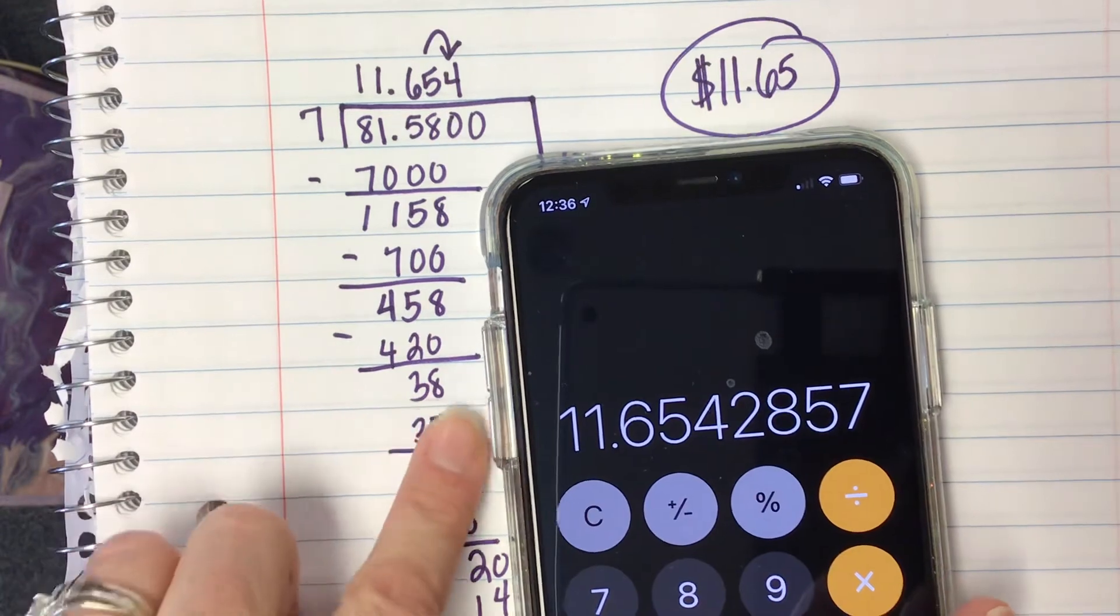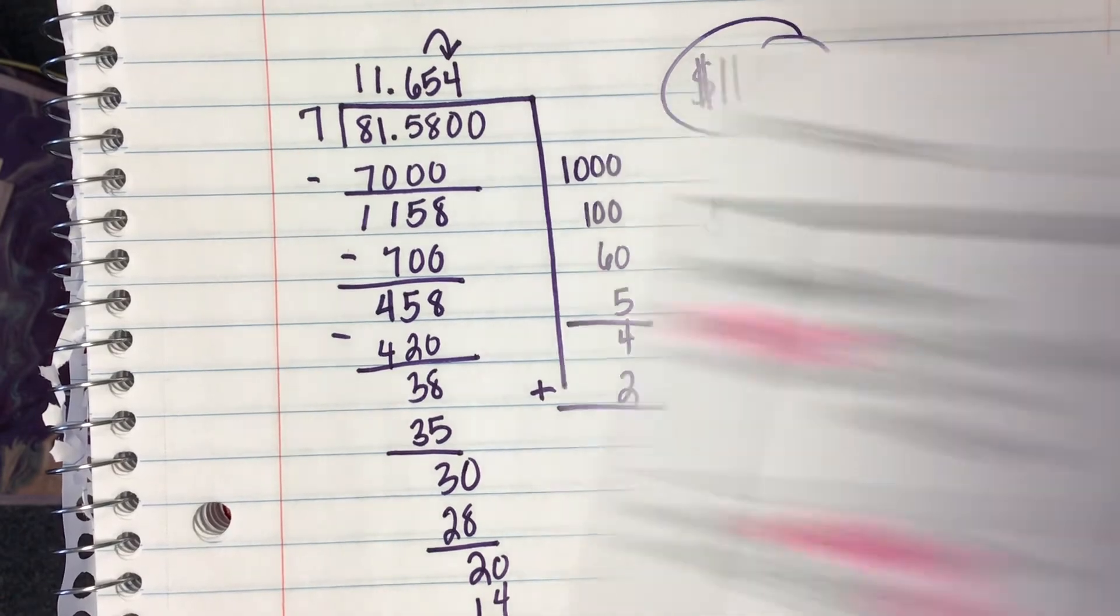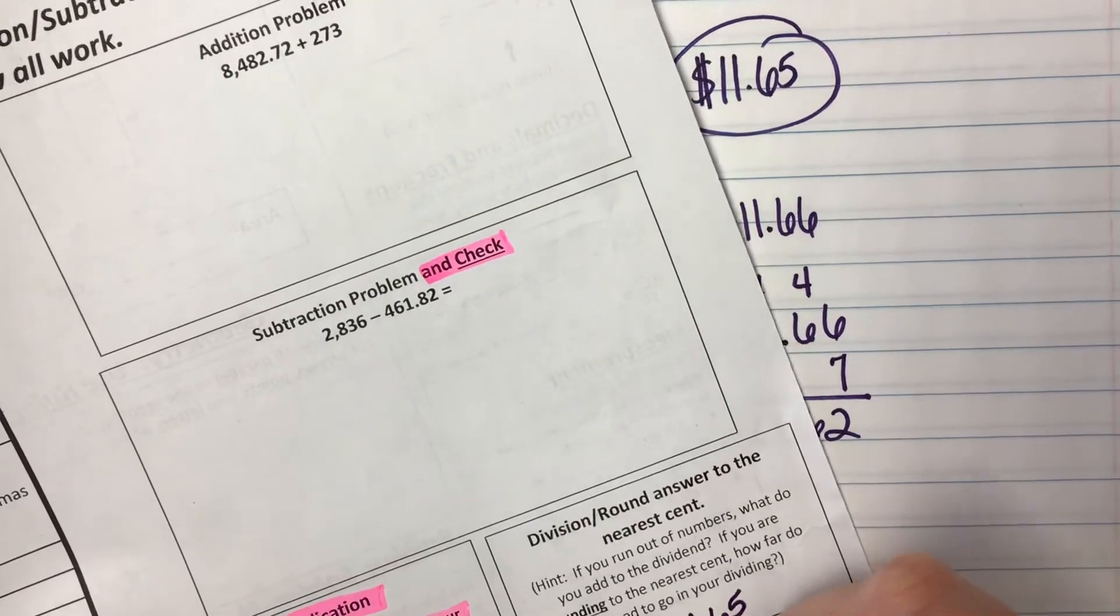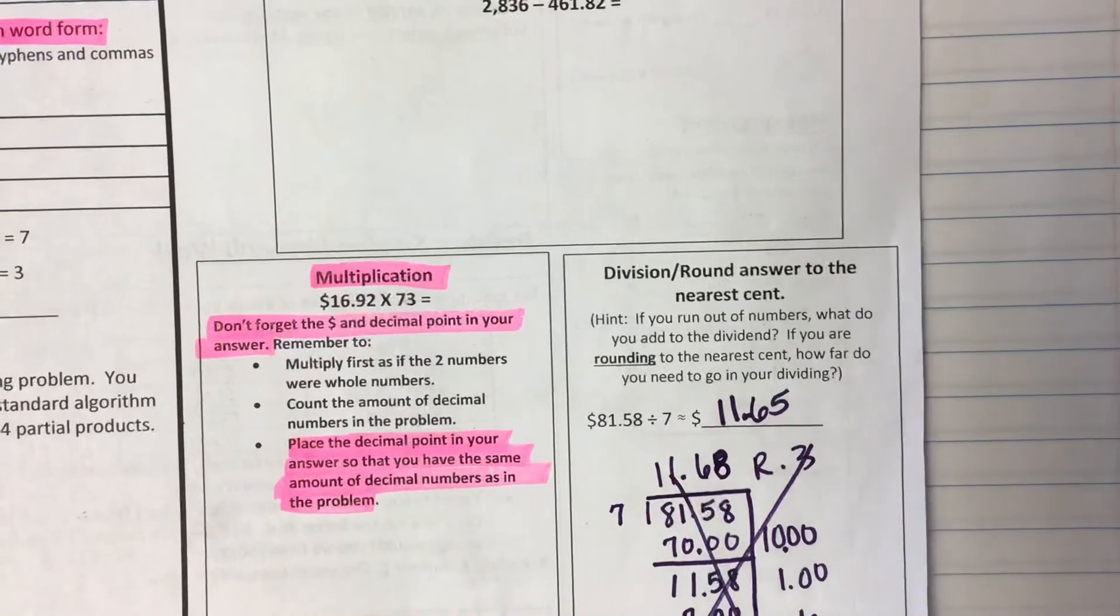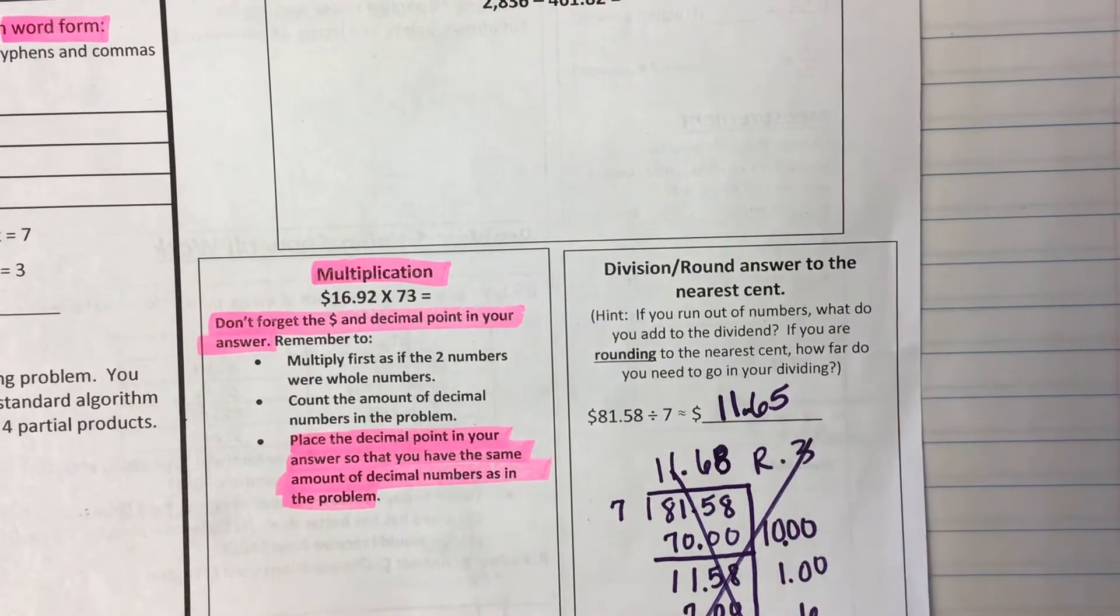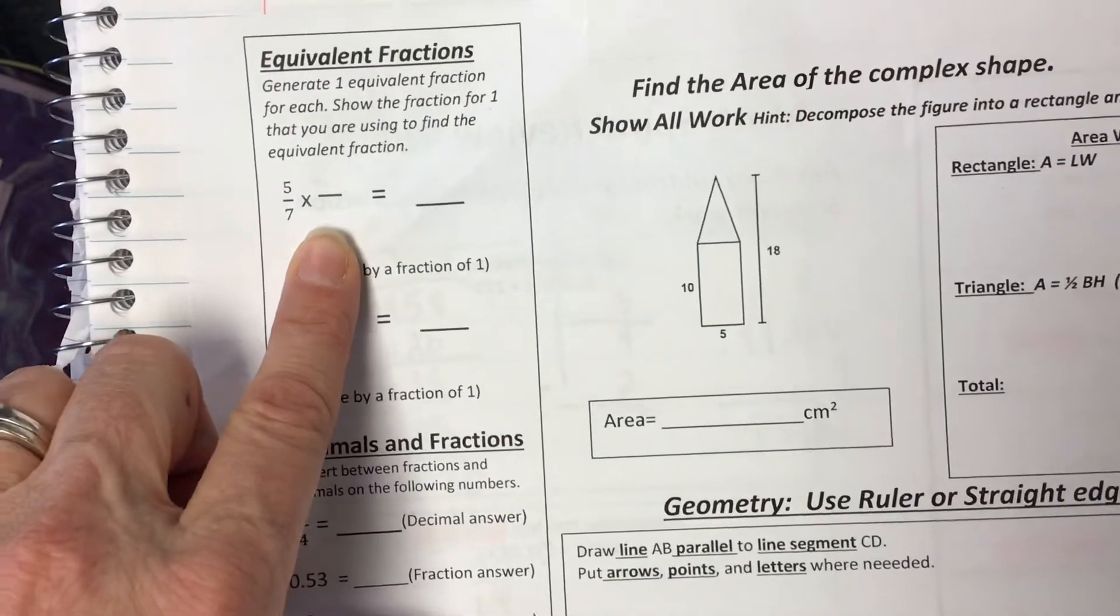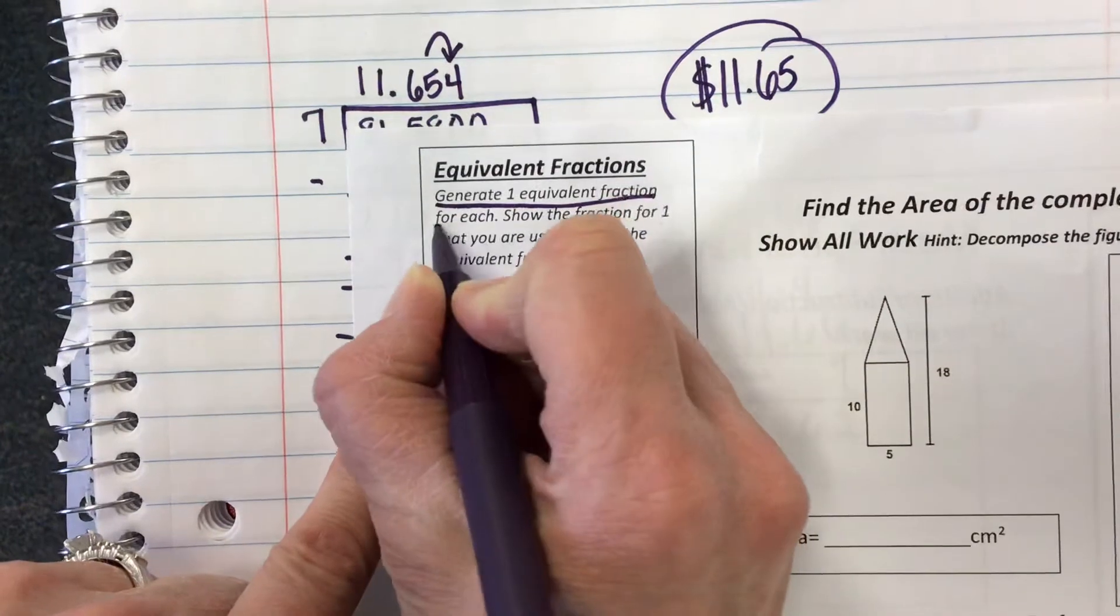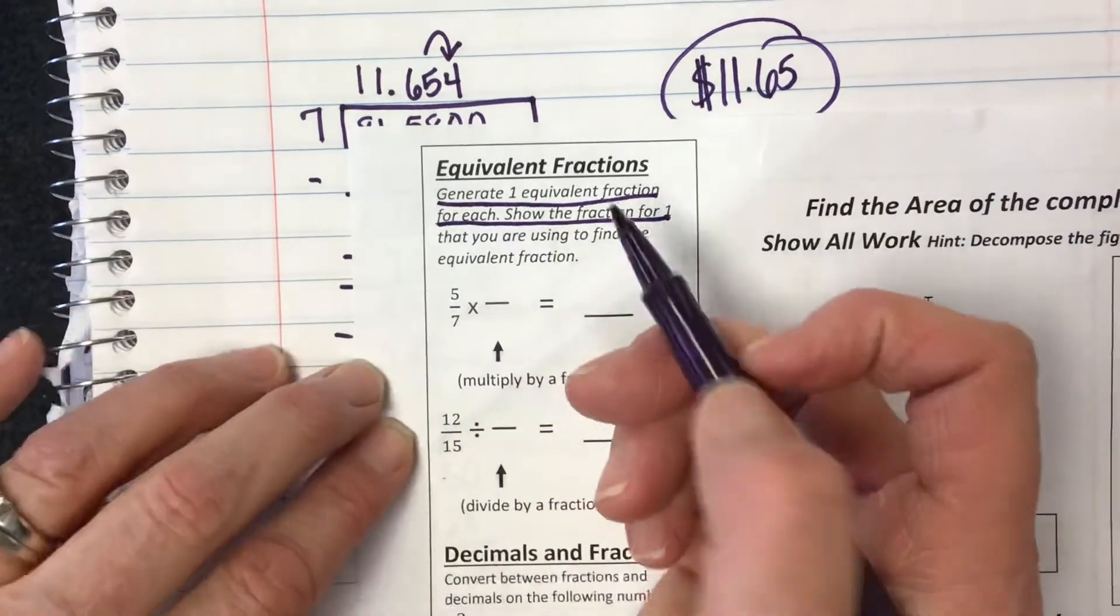Okay, so that's a really tricky one. And I'm sorry this video is so long, but I think it's important to show that we learned something new here. Okay, when you're rounding, you can't multiply back to check. Alec, are you with me? Okay, so that was a lot. I'm glad we did that one together. Go ahead and put your answer in the blank. $11.65. We went through and made an error, and then we figured that one out. Okay. You should have gotten it on Friday. That should be in your red math folder. Okay, don't forget to generate an equivalent fraction for each. Show the fraction for one that you're using to find the equivalent fraction.